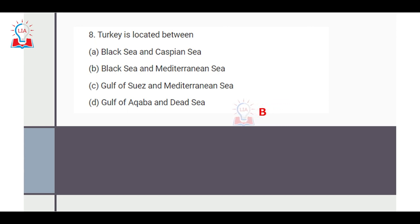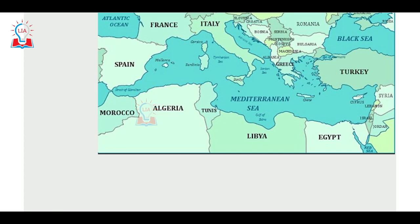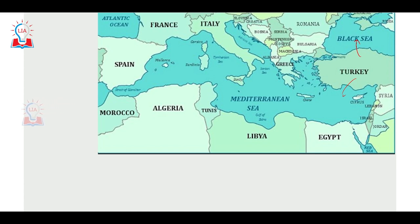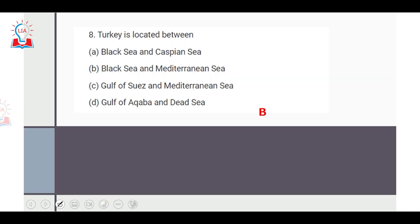The eighth question is a world mapping question asking between which seas Turkey is located — Black Sea and Caspian Sea, Black Sea and Mediterranean Sea, Gulf of Suez and Mediterranean Sea, or Gulf of Aqaba and Dead Sea. Looking at the map, on the north side of Turkey we have the Black Sea and on the south side we have the Mediterranean Sea. These are connected by the Strait of Dardanelles and the Strait of Bosphorus via the Sea of Marmara. So the correct answer is B.